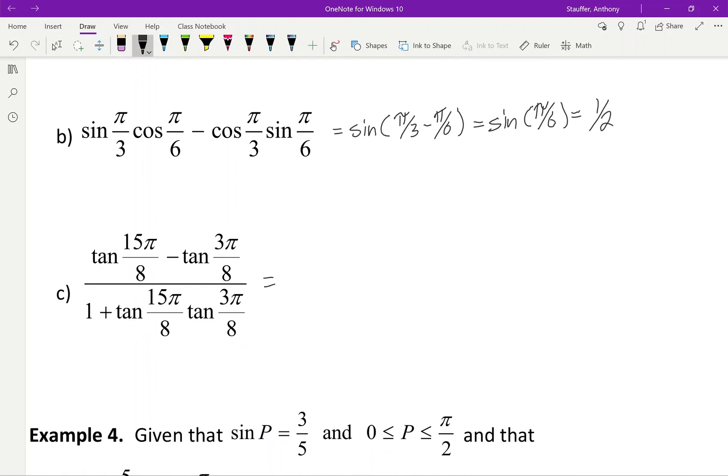The next one we again notice that this is the tan difference. So I go tan of 15π/8 minus 3π/8, which will give me the tan of 12π/8, which reduces to the tan of 3π/2. And we notice that that one on our unit circle is just simply undefined.